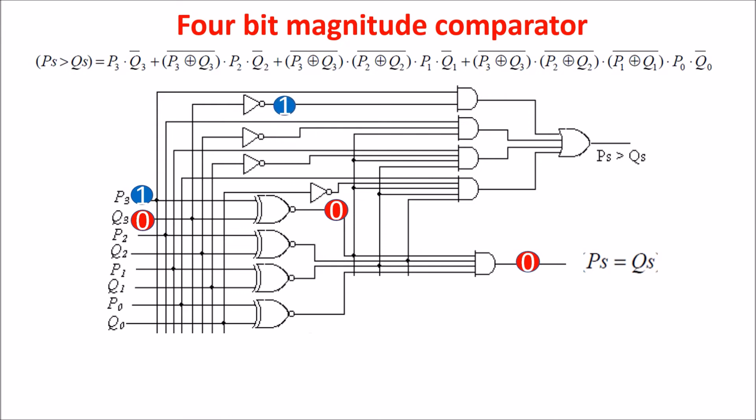So the AND gate 2 is at 0. If Q3 is 0, this inverter is at 1, so the AND gate is at 1 and the output of the OR is at 1, detecting that P is greater than Q.